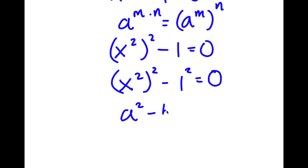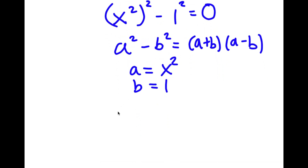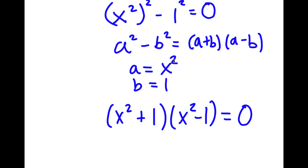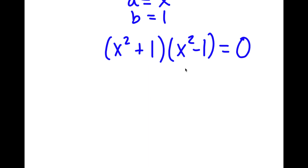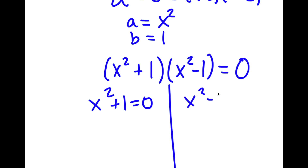If I have something in the form a squared minus b squared, this equals a plus b times a minus b. In this case, a is x squared and b is 1. So I have x squared plus 1 times x squared minus 1, and this is equal to 0. This gives me two equations: x squared plus 1 equals 0, and x squared minus 1 equals 0.